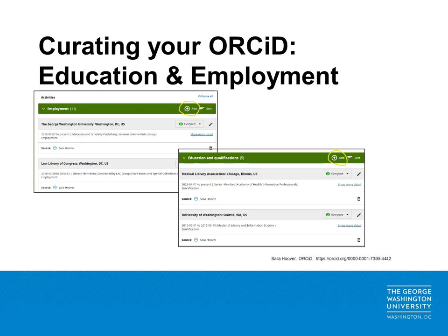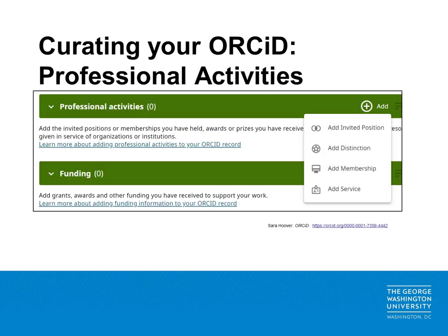Once you have created an ORCID profile, it is best to begin the curation process by adding your education and employment information. Click on the add button next to employment or education and qualifications to manually add this information. Including current employment information and ensuring that this information is viewable by everyone when possible is an important step for distinguishing your profile from other researchers. Under education and qualifications, list professional certifications as well as professional degrees. Your ORCID can also be a valuable space for tracking professional activities and funding, and adding peer reviewer activity under your professional activities can be a great way to track those contributions to your field.